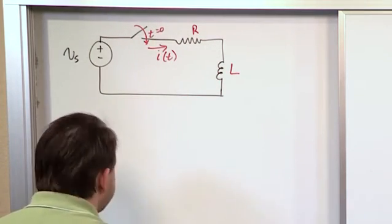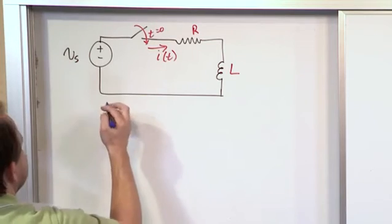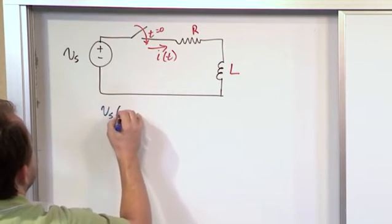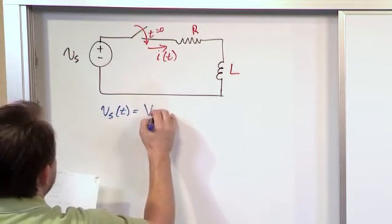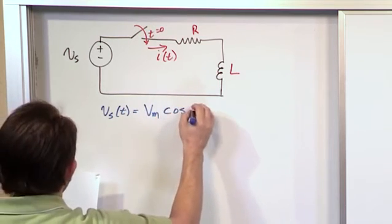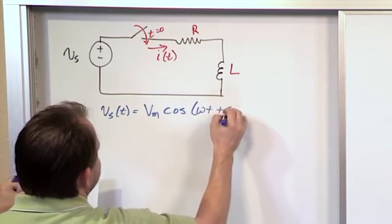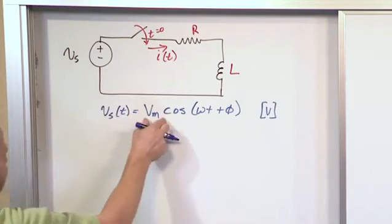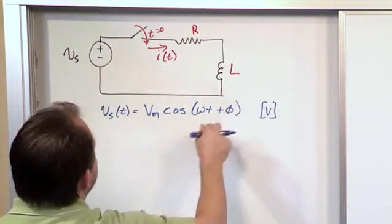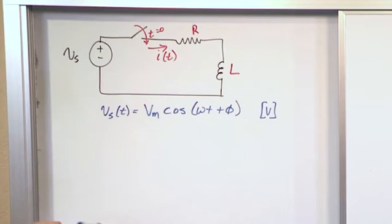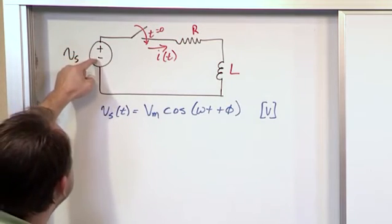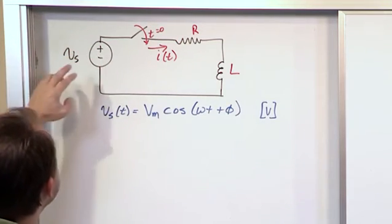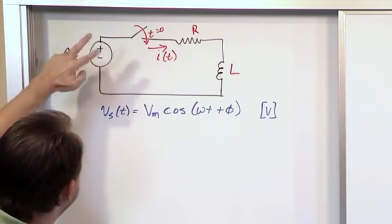Now for the purpose of this discussion, I'm going to tell you the source, V sub S, is a function of time, and it's exactly what we've been talking about before. Vm cosine of omega T plus phi. Now these can be real numbers, obviously. If I build this thing, I'm going to have a real amplitude, a real frequency, and a real phase angle, but you've got to sort of envision, even though it says plus and minus here, it's something I want to point out real quick, it's really oscillating back and forth in terms of voltage.